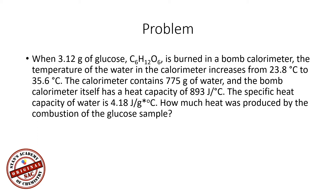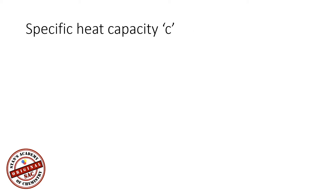The temperature increases from 23.8 degrees Celsius to 35.6 degrees Celsius. The calorimeter contains 775 grams of water, and the bomb calorimeter itself has a heat capacity of 893 joules per degree Celsius. The specific heat capacity of water is 4.18 joules per gram per degree Celsius. How much heat was produced by the combustion of the glucose sample?